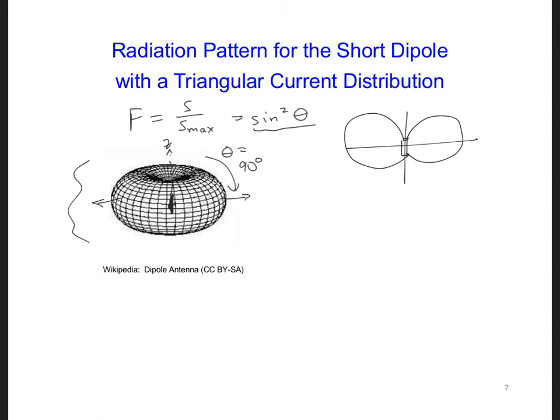And the horizontal slice, this is Z, is called an azimuthal pattern. For that, we get the same radiation in all directions, so we just have a circle.